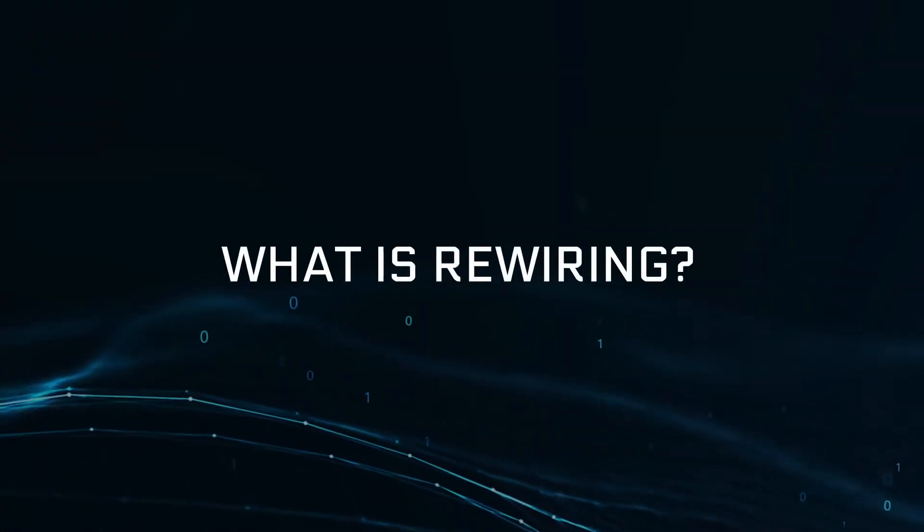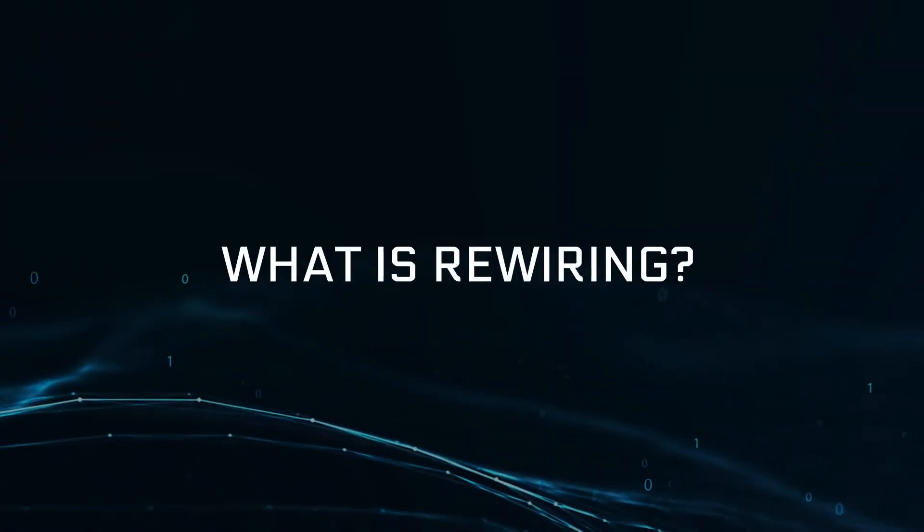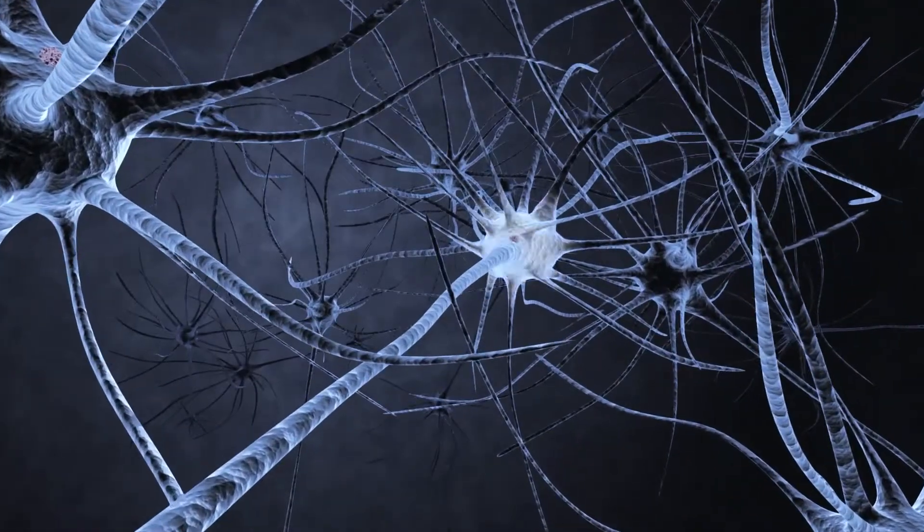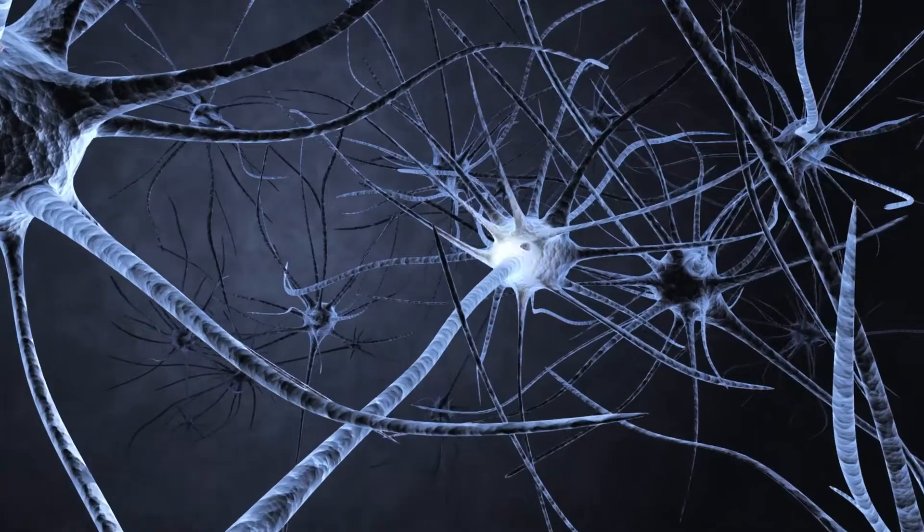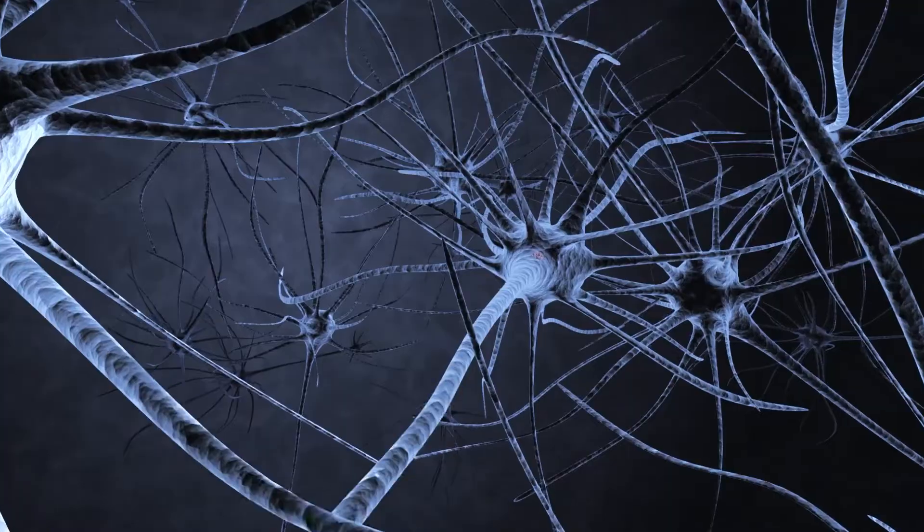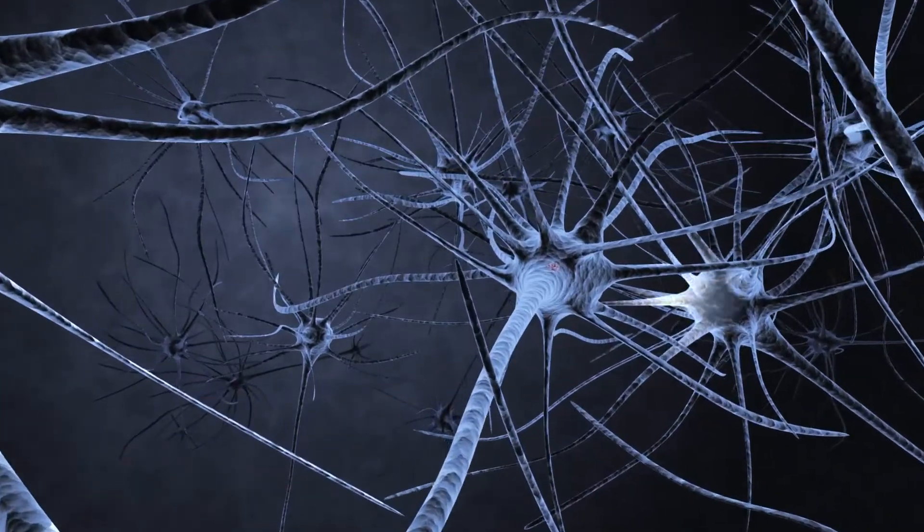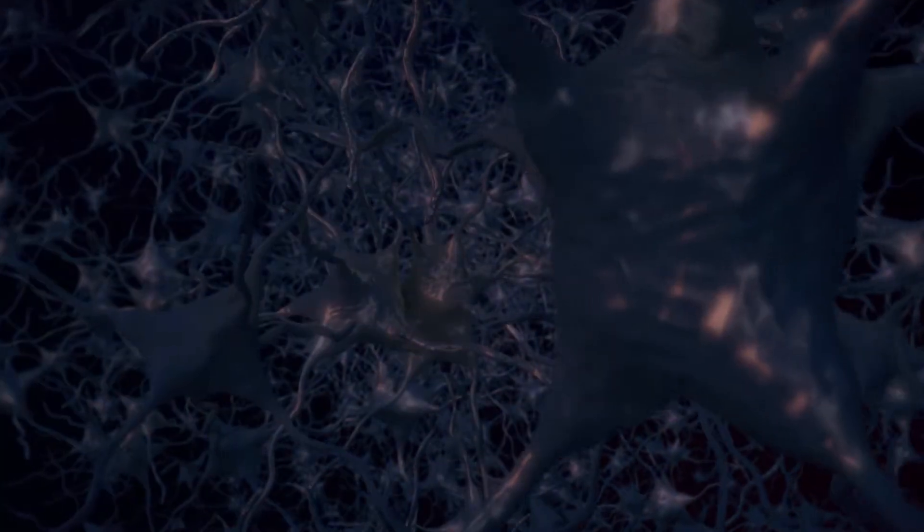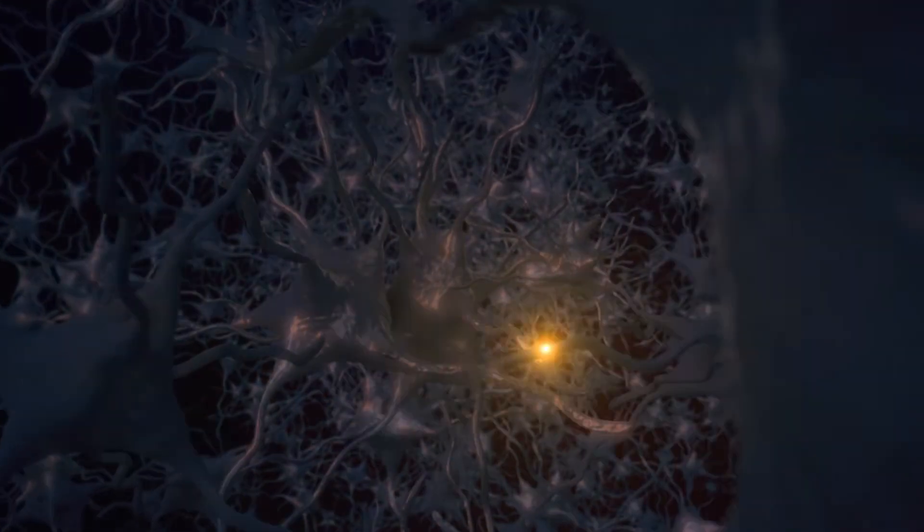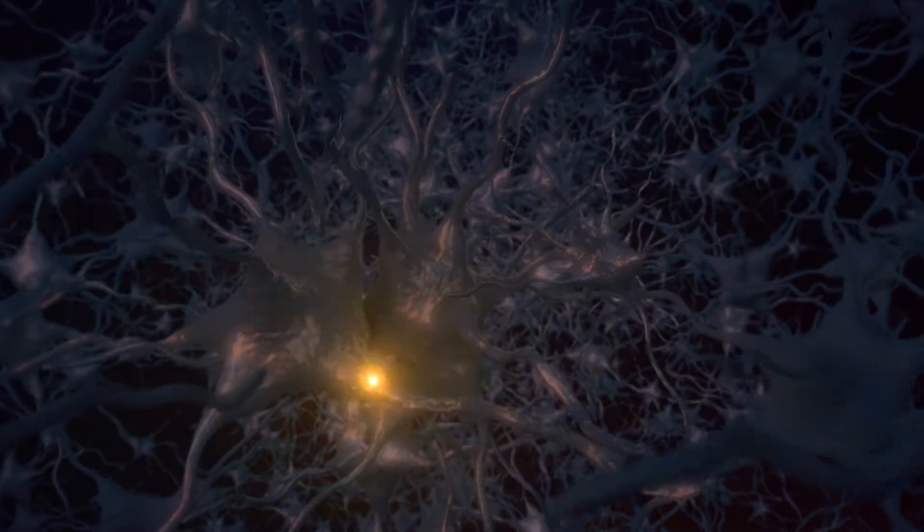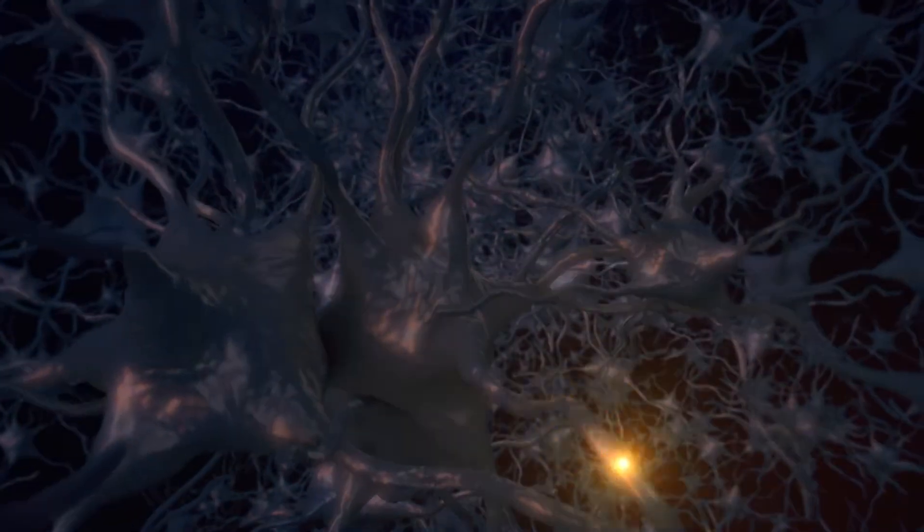So what is rewiring? Our brain is essentially a web of billions upon billions of wires, called neurons, that function by transporting information using electrical signals, and transforming that information on the way from an input, our five senses or memory, to an output, an action we take.